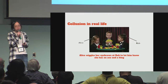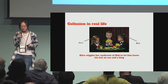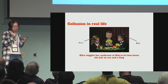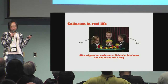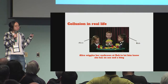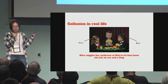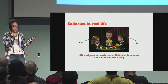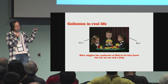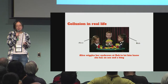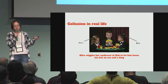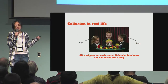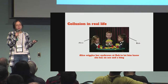When we talk about collusion in real life, we talk about games, and specifically games where your friend Alice tries to cheat you out of your hard-earned money by wiggling her eyebrows at her friend Bob and sending him her hand in poker.